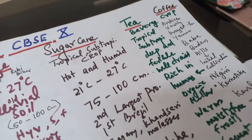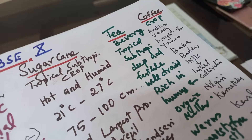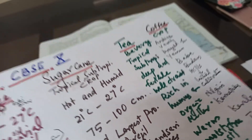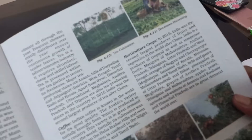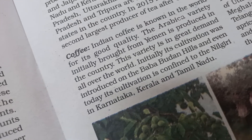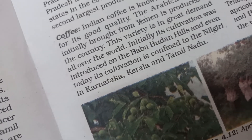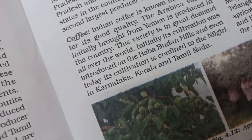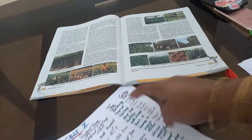Then comes coffee. It is also a beverage crop. It is the Arabica variety, initially brought from Yemen. This variety is in great demand all over the world. Its cultivation was initially introduced on the Baba Budan Hills, and even today its cultivation is confined to the Nilgiri hills of Karnataka, Kerala, and Tamil Nadu.